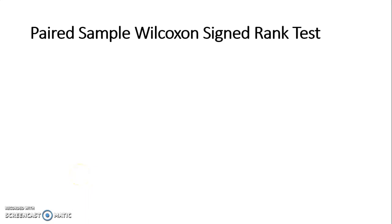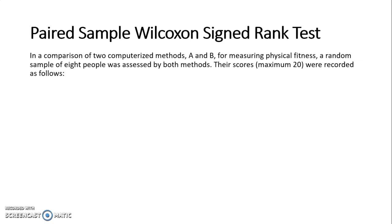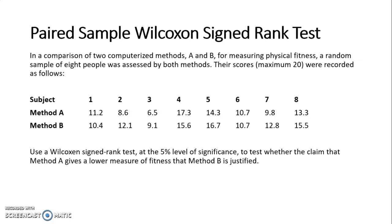In this example we are going to look at a paired sample Wilcoxon signed rank test. In a comparison of two computerised methods A and B measuring physical fitness, a random sample of 8 people was assessed by both methods. Their scores, a maximum of 20, were recorded. Use a Wilcoxon signed rank test at the 5% level of significance to test whether the claim that method A gives a lower measure of fitness than method B is justified.